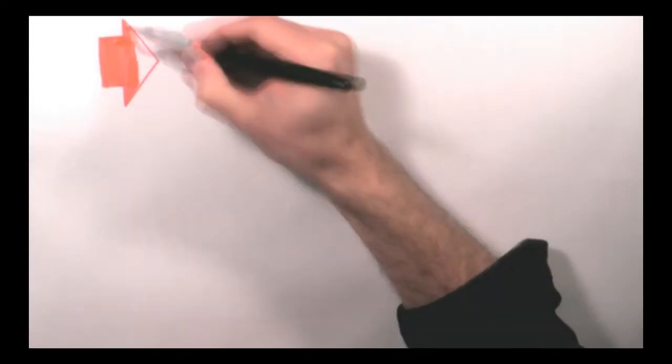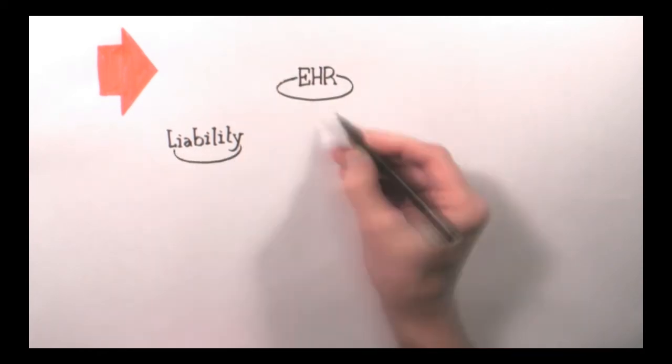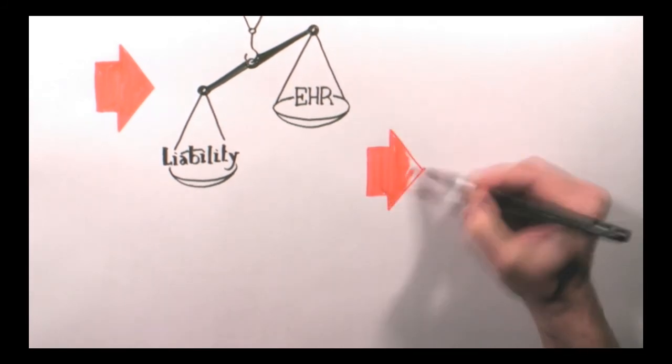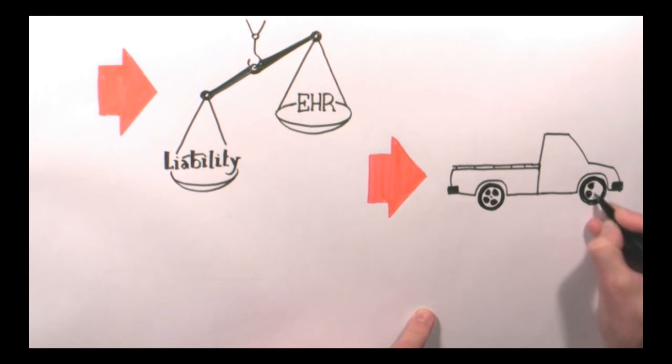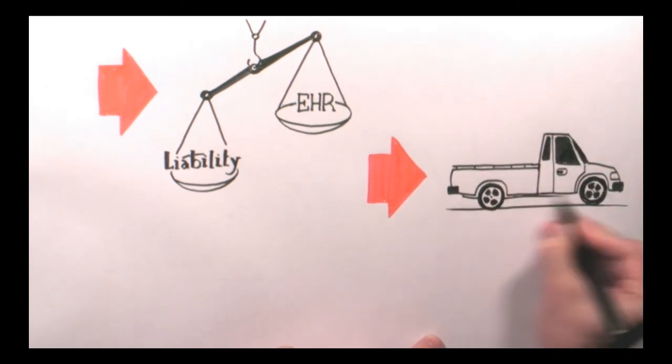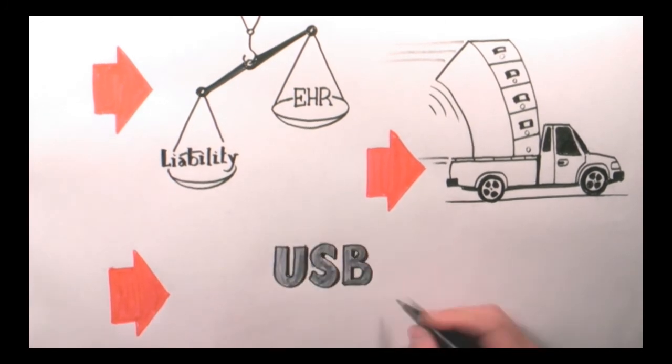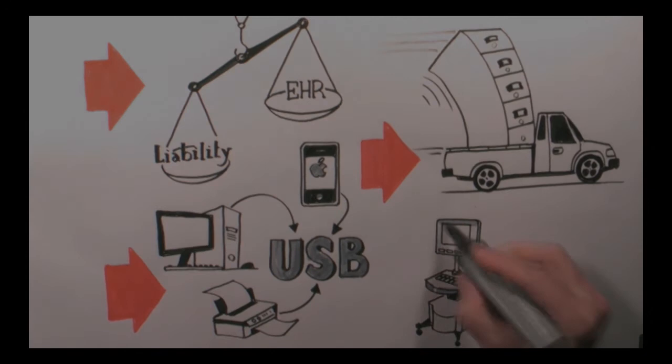So in conclusion, there are a few things we know. One, health records need to be secured or the liability is really hefty. Two, sometimes files need to be physically transported either from medical devices or medical equipment, office equipment, PCs, tablets, smartphones. Three, USB is the standard for physical data connection and transfer. So you should consider one of these.